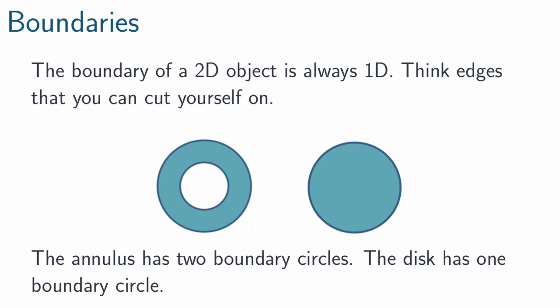Moving up a dimension, the boundary of a 2D object is always 1D. Think about 2D objects as being objects cut out of paper, and think about edges of these paper objects that you could get a paper cut on. The annulus has a two-part boundary. It has two boundary circles, an inner circle and an outer circle. The disk, on the other hand, on the right side, only has one boundary circle.